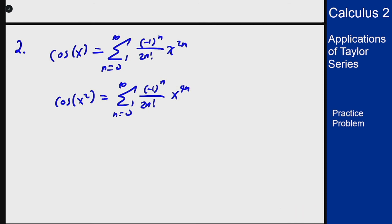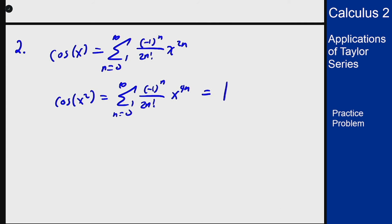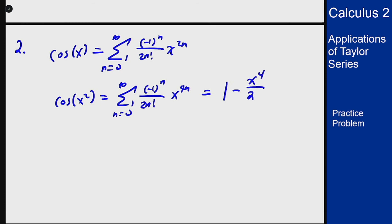The first two terms are: 1 when n=0, and -x⁴/2 for n=1. The next term would be +x⁸/4!, but since we only want the first two terms, we do not need it.